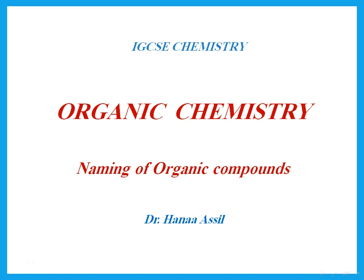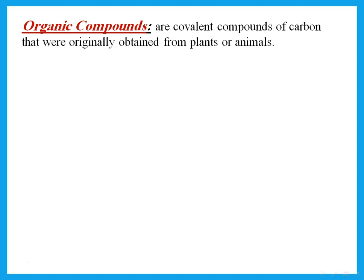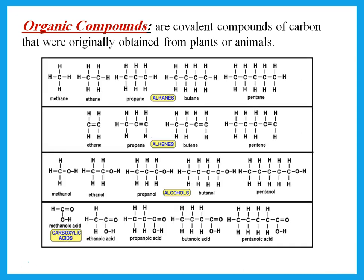Hello, this is Dr. Hannah Asiel. Today we're talking about the first part of organic chemistry in the IGCSE syllabus — specifically how to name organic compounds. First of all, you need to know what organic compounds are. Organic compounds are covalent compounds of carbon that were originally obtained from plants or animals. So all the compounds we're going to be talking about are compounds of carbon.